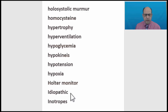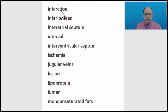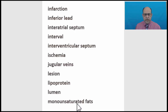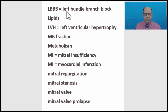Idiopathic. Inotropes. Infarction. Inferior lead. Interatrial septum. Interval. Interventricular septum. Ischemia. Jugular veins. Lesion. Lipoprotein. Lumen. Monounsaturated fats. Left bundle branch block. Left ventricular hypertrophy.